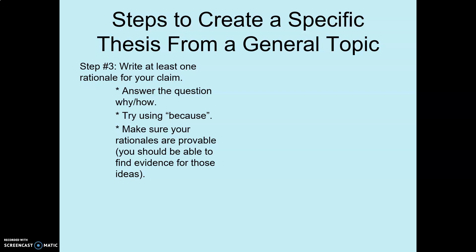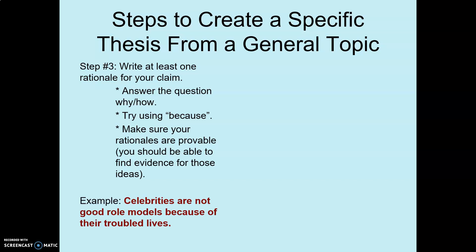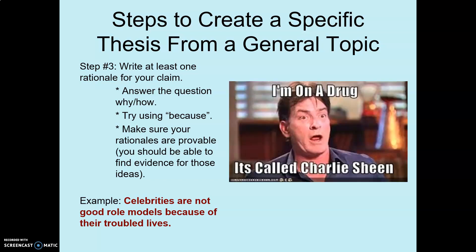Step three: write at least one rationale for your claim — you're answering the question 'why or how?' I would say use the word 'because' — that's a really good place to start because 'because' is an easy word to use. Start easy and then polish your writing later. Make sure your rationales are provable — you should be able to find evidence for those ideas. My example: 'Celebrities are not good role models because of their troubled lives.'